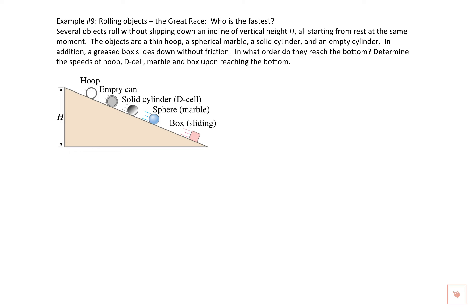In this example, we're looking at what's called the Great Downhill Race. In the figure shown, we have a contest between a hoop, an empty can, a solid cylinder, a sphere, and a box. They're all being released at the same height H, on the same incline with the same angle, and released from rest at the same instant. Some of them are rolling — the hoop, can, cylinder, and sphere — and one of them, the box, is sliding down the ramp without friction. The big question is: which one will win the race to the bottom of the hill, and does rotation affect the outcome?